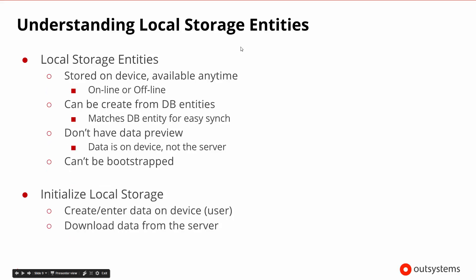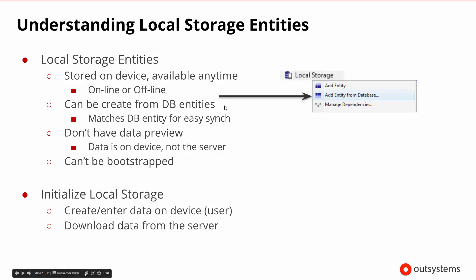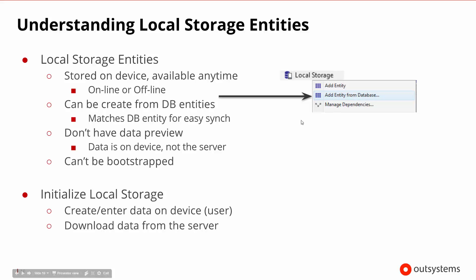When we begin to think about the details of local storage entities in OutSystems, they're stored on the device, but they can also be created from database entities. So when we look at the database entities, there's a set of them, and then if we come to the local storage entities, we can ask it to add an entity from the database. That will basically duplicate the database entity and create a local copy of that. So if we had to-dos, they would be called local to-dos and would have the exact same set of attributes as the ones in the database, which makes it much easier to map the syncing process.